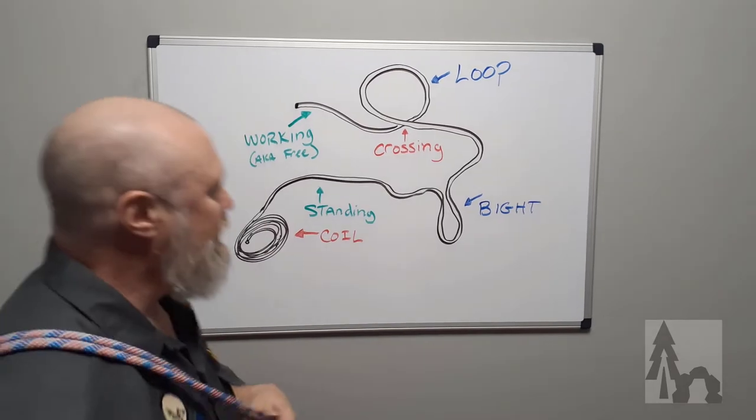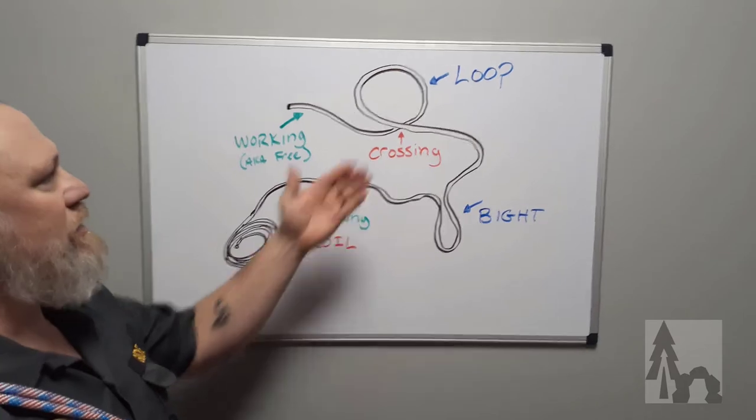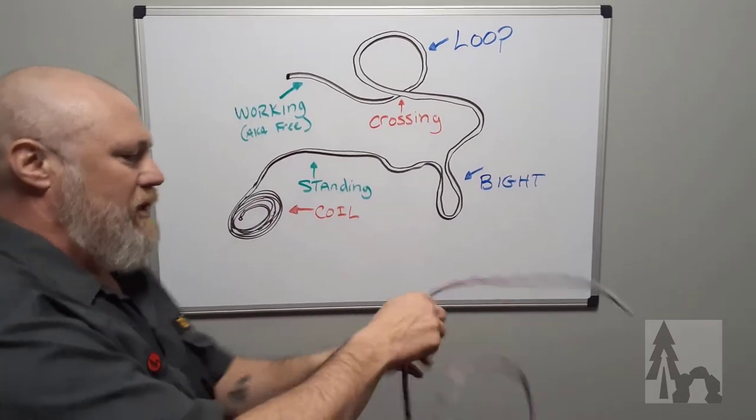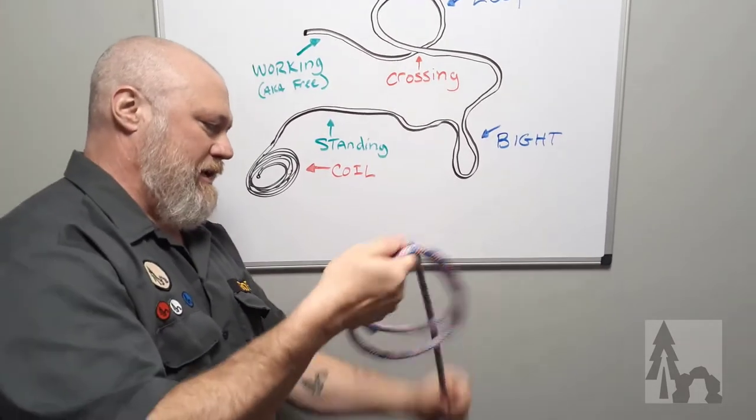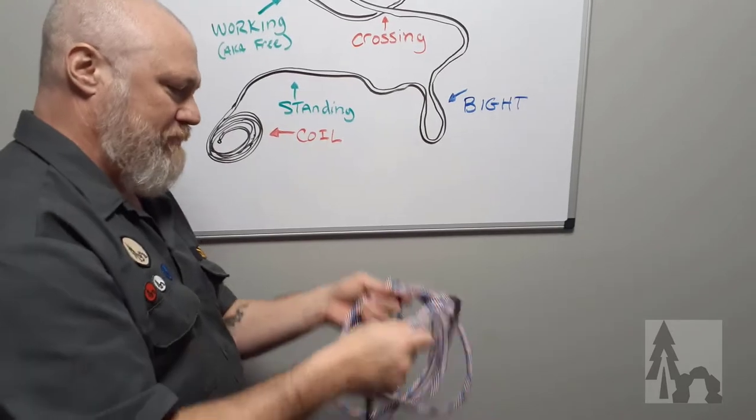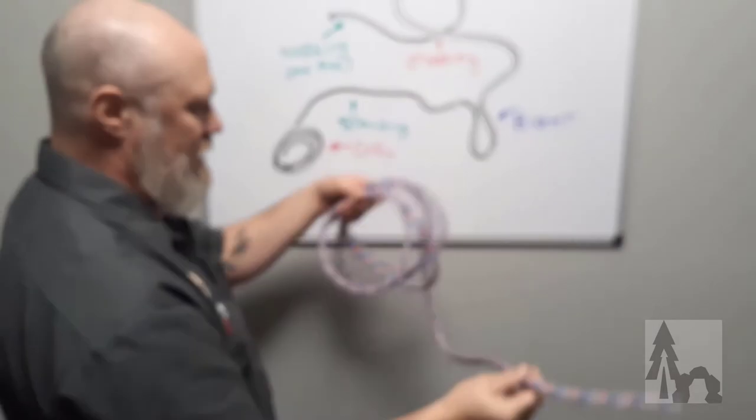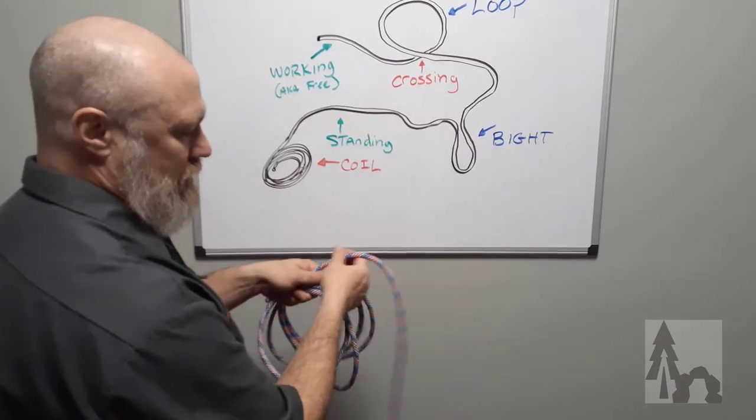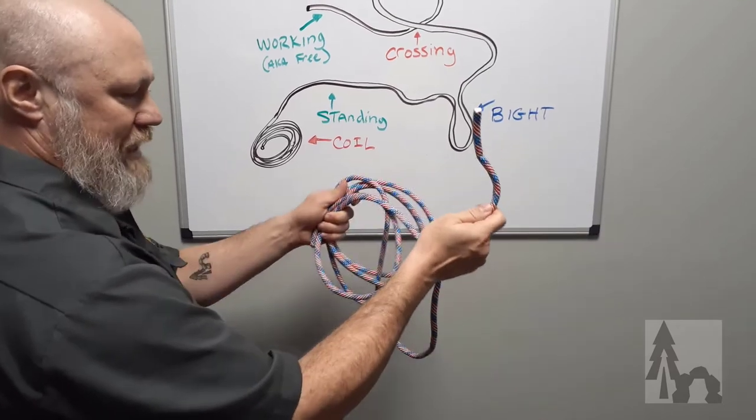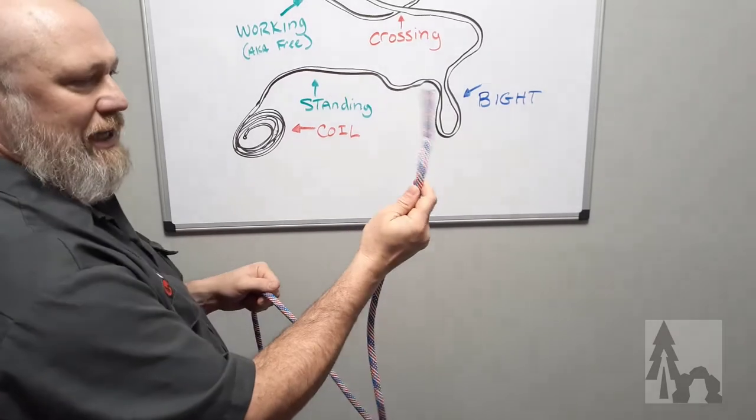Now you can have an overhand loop or an underhand loop, and the terminology is relative to you that's tying the knot. So here I have just a length of rope, and if I coil this rope up and I'm going to tie some knots or some bites or binds with this end, this would be my coil. So the part that's coming off is the standing end of the rope, and this would be my working end.